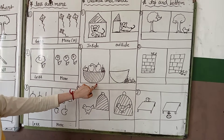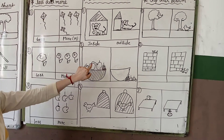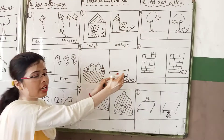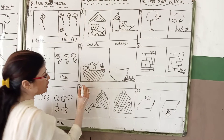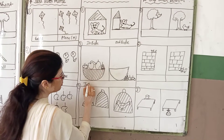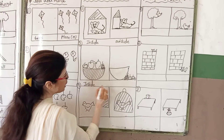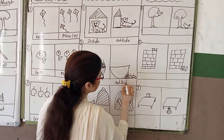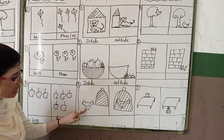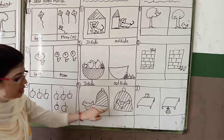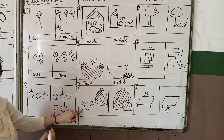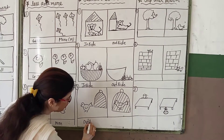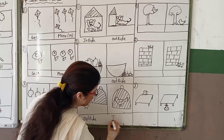Second picture: look at the basket — one basket and many fruits are there. Some fruits are inside the basket, but here the fruits are outside of the basket. So you can write here inside and you can write here outside. Clear? Next one: a bird is inside the cage and this bird is outside the cage. You can write here O — O means outside — and I means inside.